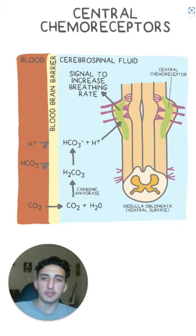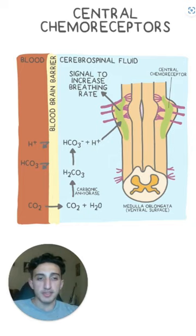So central chemoreceptors are the specialized chemical receptors on the medulla oblongata. Now these central chemoreceptors' entire job is to monitor the cerebrospinal fluid for any changes in acidity.